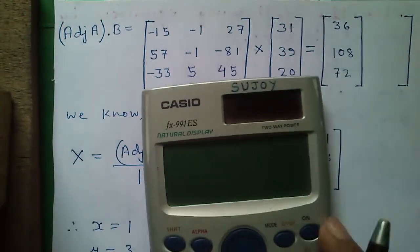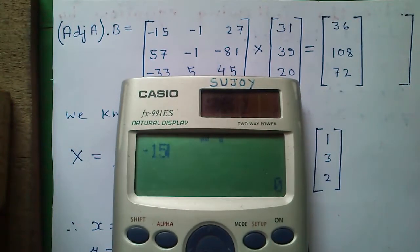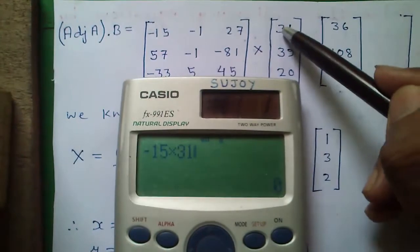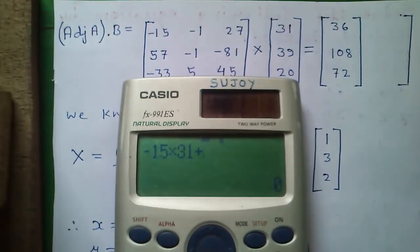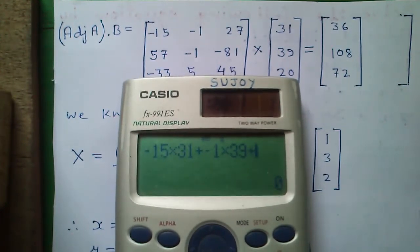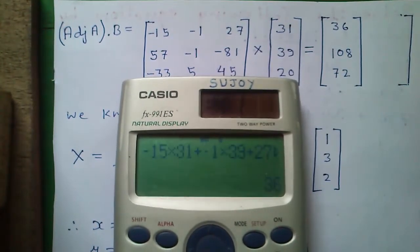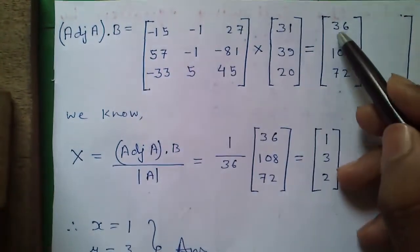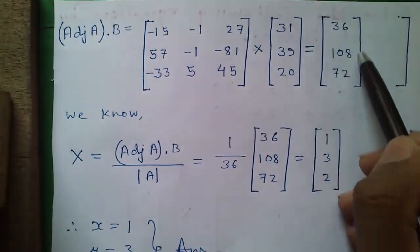Let me show you a proof for the first element: (−15)×31 + (−1)×39 + 27×20 = −465 − 39 + 540 = 36. This gives us our adjoint(A)×B matrix with values 36, 108, and 72.